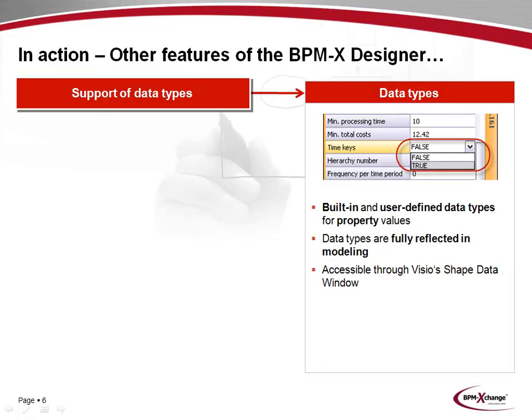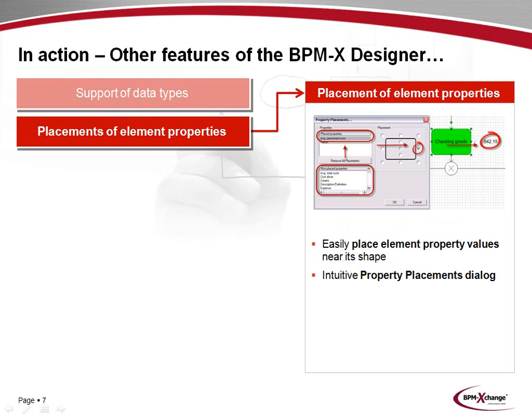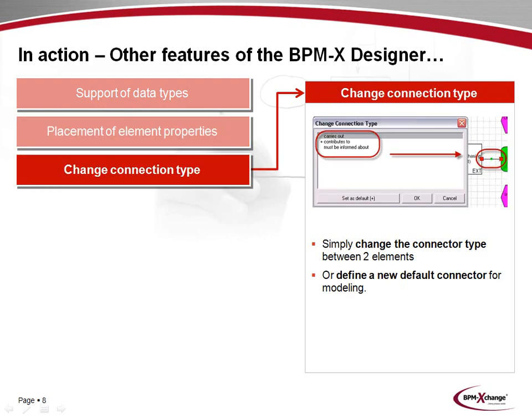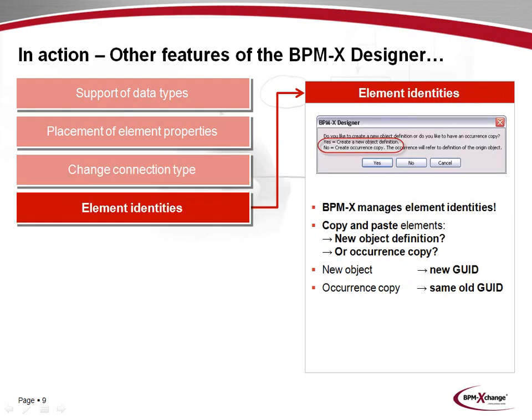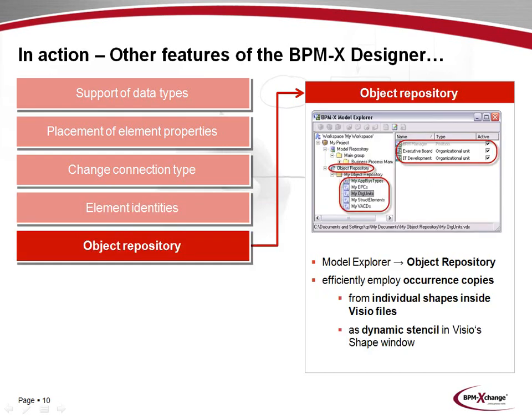The BPMX Designer has a number of features not shown in the demo, such as the support of data types, meaning property values may be of any built-in or user-defined data types, fully reflected in modeling and accessible through Visio's shape data window. The placement of element properties allows you to place property values near a shape through an intuitive placement dialog. You may easily change the connection type between two elements or define a new default connection via a simple dialog. BPMX manages element identities — whenever you copy and paste an element, the Designer asks whether you wish to create a new object definition or an occurrence copy. New objects get a new globally unique ID, while occurrence copies retain their old ones. The Model Explorer's object repository feature enables you to efficiently employ occurrence copies from individual shapes inside Visio files.